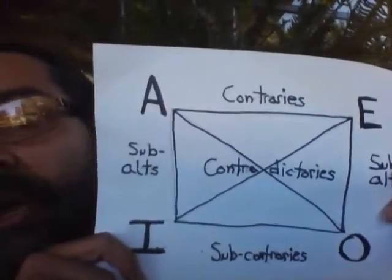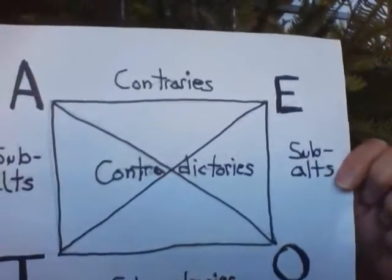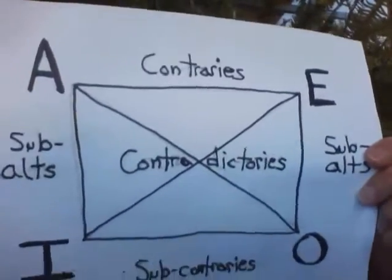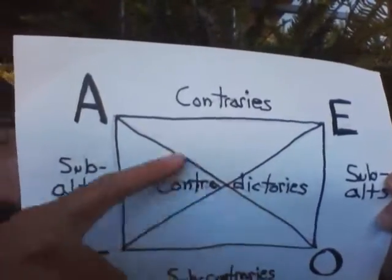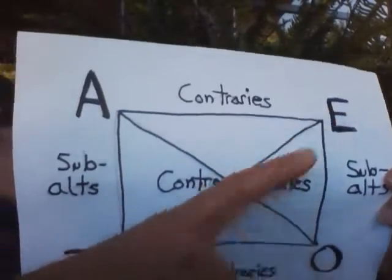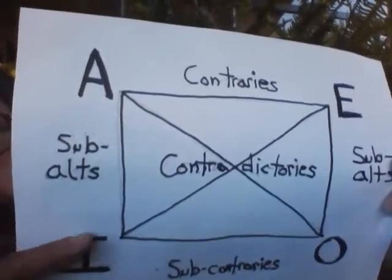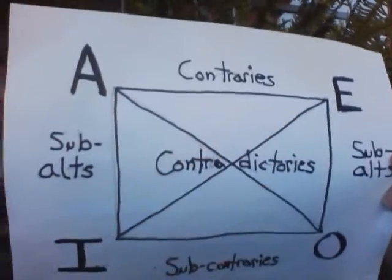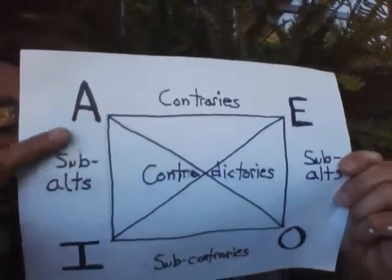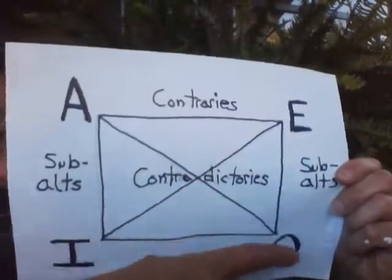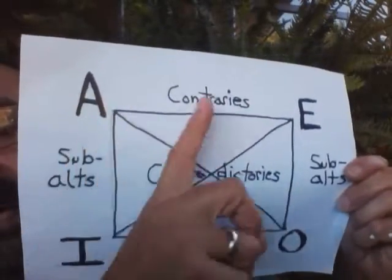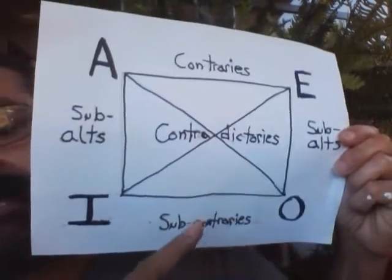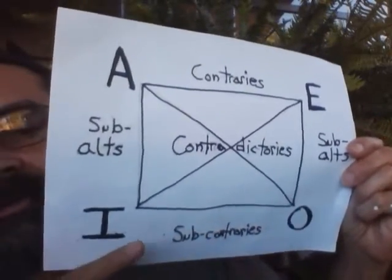The square of opposition — here's what it looks like, using very sophisticated technology. Note that with the square of opposition, if the A statement is true, the O statement must be false, because they are contradictories. If E is false, I is true. If I is true, E is false — contradictories. The relationship between the subalternates — subalternation — you'll have to explore on your own in the book. Also the relationships between the contraries — the A and E statements — and relationships between subcontraries, I and O.